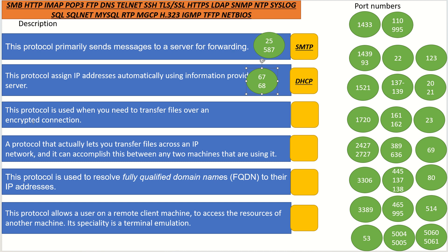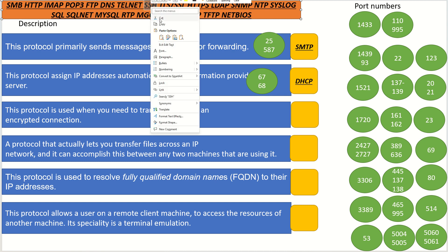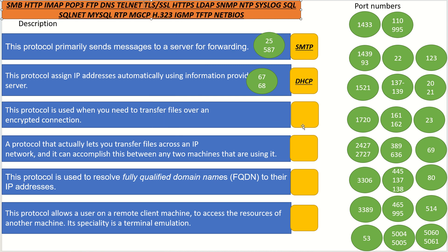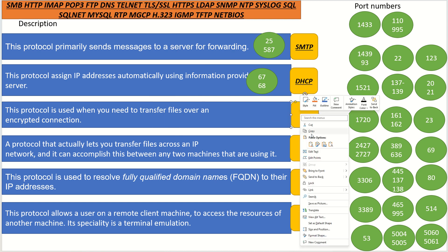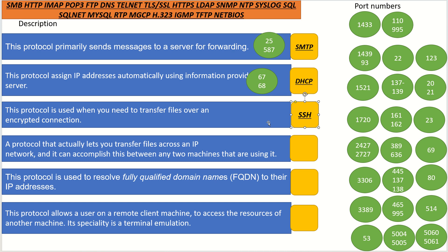This protocol is used when you need to transfer files over an encrypted connection. The keyword here is 'encrypted,' and this is the Secure Shell file transfer protocol — basically called Secure File Transfer Protocol because it uses a Secure Shell connection. In our case, this maps to SSH. The port number it uses is 22 TCP.